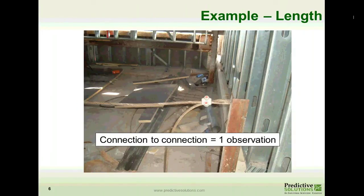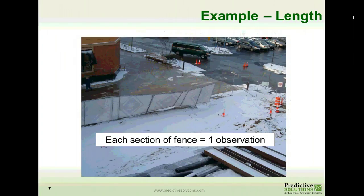As an example of measuring length, here we have a guard rail. Regardless of whether it's five feet or fifty feet, it would be connection to connection. Because if one end is undone or bad, it affects the safety of the entire system. Another example of length is this fence in this photo — each section of that fence is one observation.